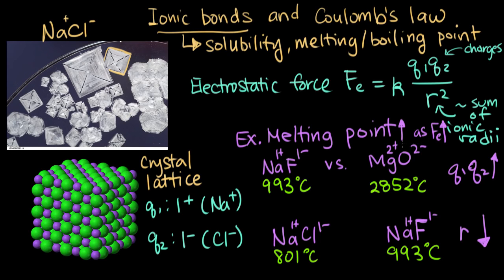So in each of these pairs, the compound that has the higher melting point is the one that also has the higher electrostatic forces. And that's either because the charges are higher, Q1 and Q2 are higher, or because the distance between the ions went down. So these are some examples for how we can relate the properties of ionic compounds to the electrostatic force using Coulomb's law between the cation and the anion.